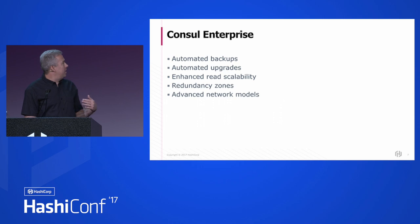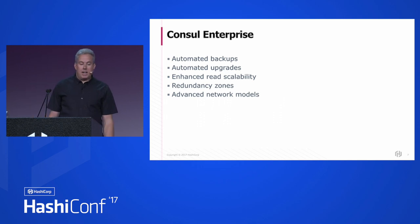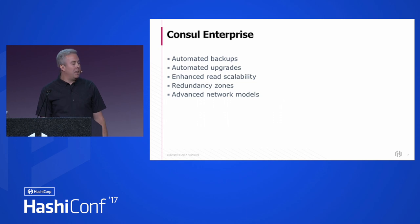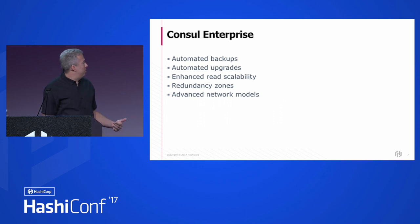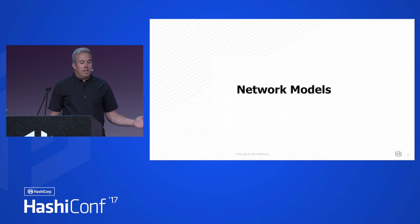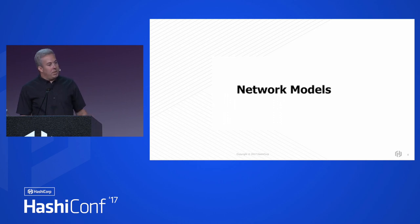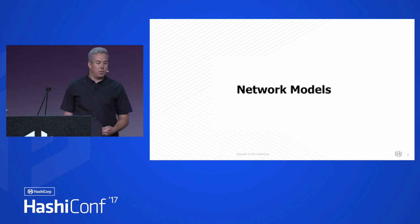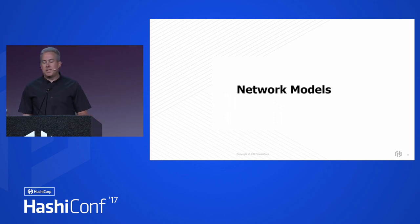This is one of the first talks that's going to focus on some console enterprise features. Console Enterprise is a paid version that adds things like automated backups, automated upgrades, read scalability features for the servers, and redundancy zones. But the interesting focus of this talk is the last bullet: advanced network models. We'll cover four different network models — two are open source and two are in Enterprise — and these are all in our shipping versions of console right now.